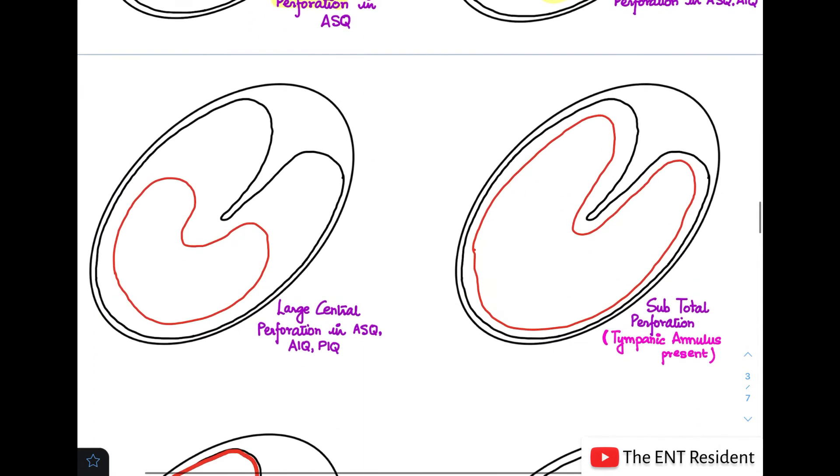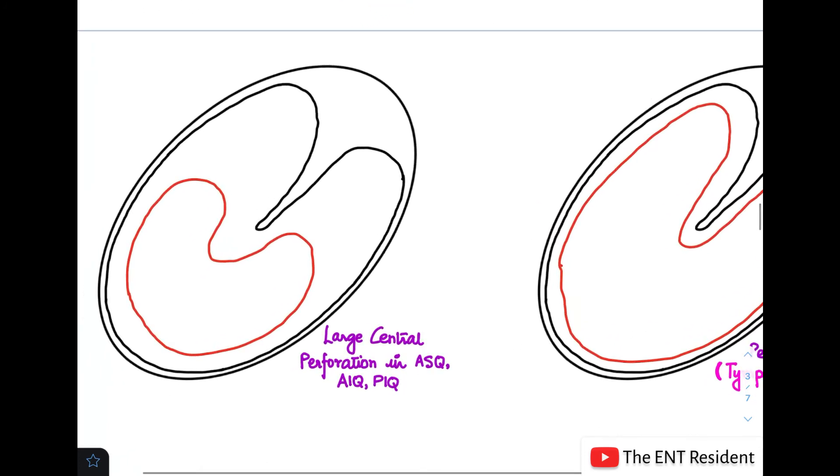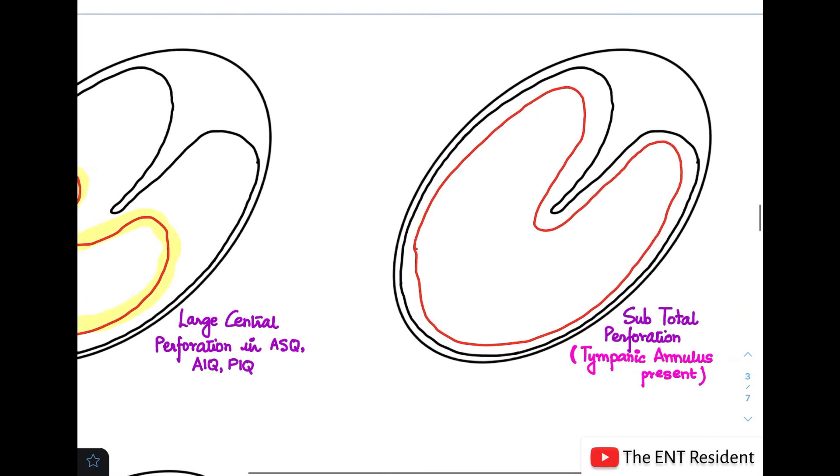Next, we can see the large central perforation involving the anterosuperior, anteroinferior, and posteroinferior quadrants. This is a large central perforation, or a large CP as we all say.